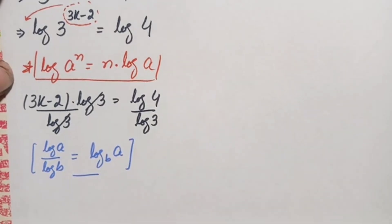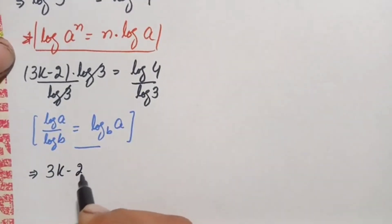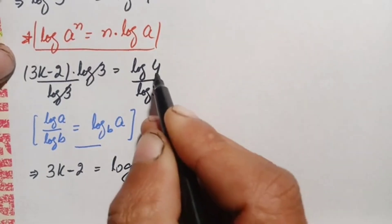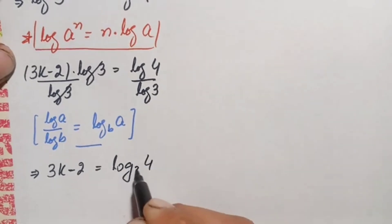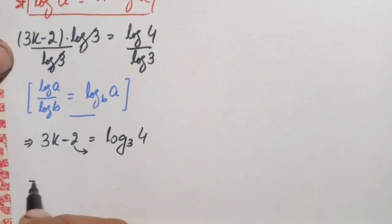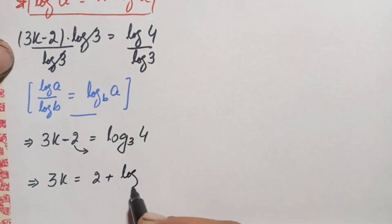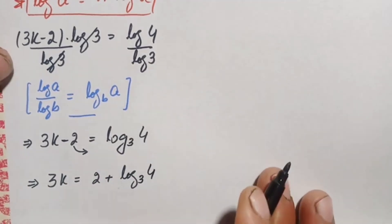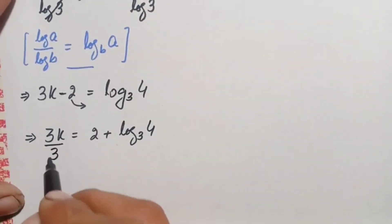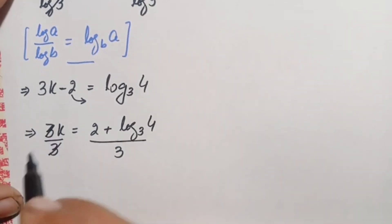Using the change of base identity, the right hand side becomes log of 4 with base 3. Moving the −2 to the right hand side gives 3k equals 2 plus log base 3 of 4. Dividing both sides by 3 isolates k.